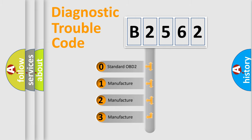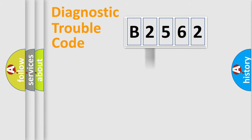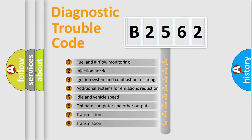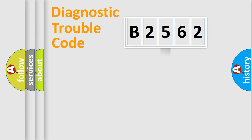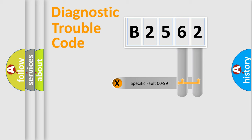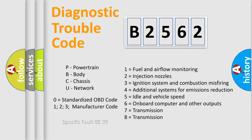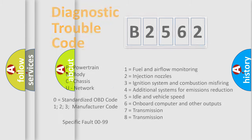If the second character is expressed as zero, it is a standardized error. In the case of numbers 1, 2, or 3, it is a manufacturer-specific expression of a car-specific error. The third character specifies a subset of errors. This distribution is valid only for the standardized DTC code, and only the last two characters define the specific fault of the group — but only when the second character is zero.